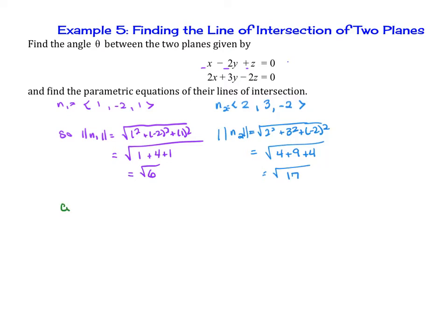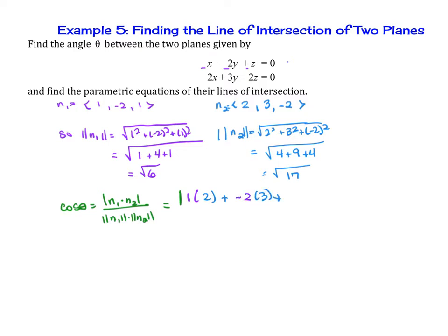Now that we have all of that, we're going to use the formula: cosine of theta equals the absolute value of n1 dot n2, all over the magnitude of n1 times the magnitude of n2. In the numerator, we multiply 1 times 2 plus negative 2 times 3 plus 1 times negative 2, and take the absolute value. In the denominator, it's the square root of 6 times the square root of 17.